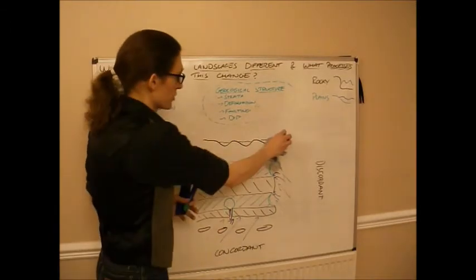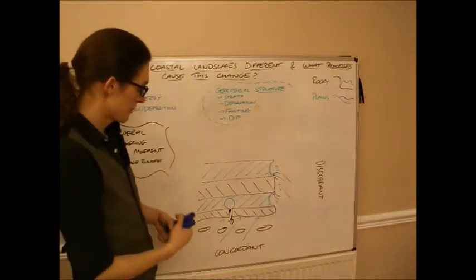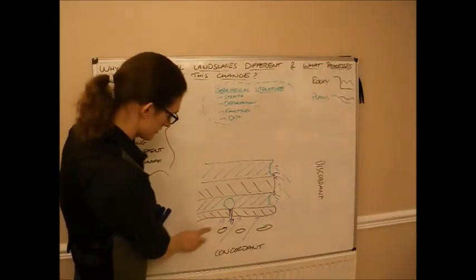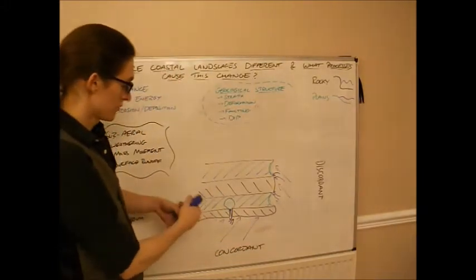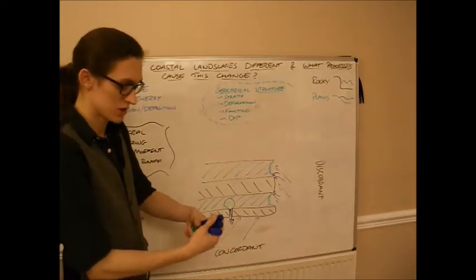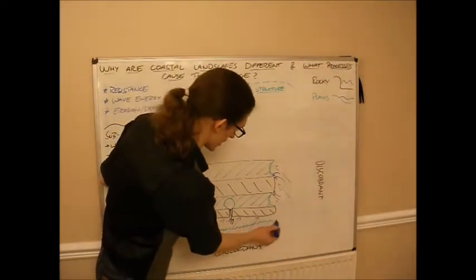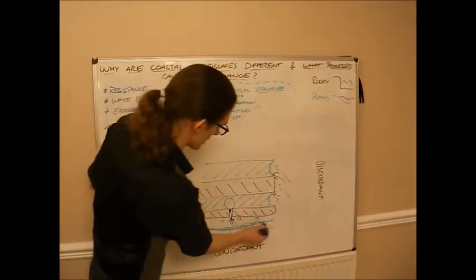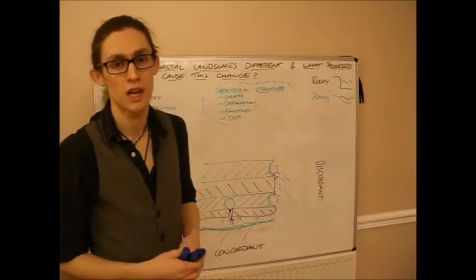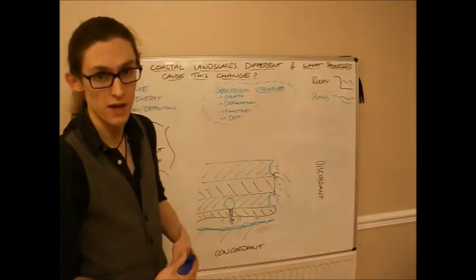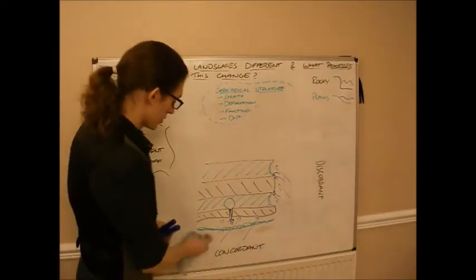On concordant coastlines, you can also get something called a haff coastline — H-A-F-F. That is where, instead of getting mountains, you get sand that has deposited itself along the coast and formed a sand bar, and in that case that creates a haff coastline. So these are the types of concordant coastline that you might get, but it all comes down to geology.